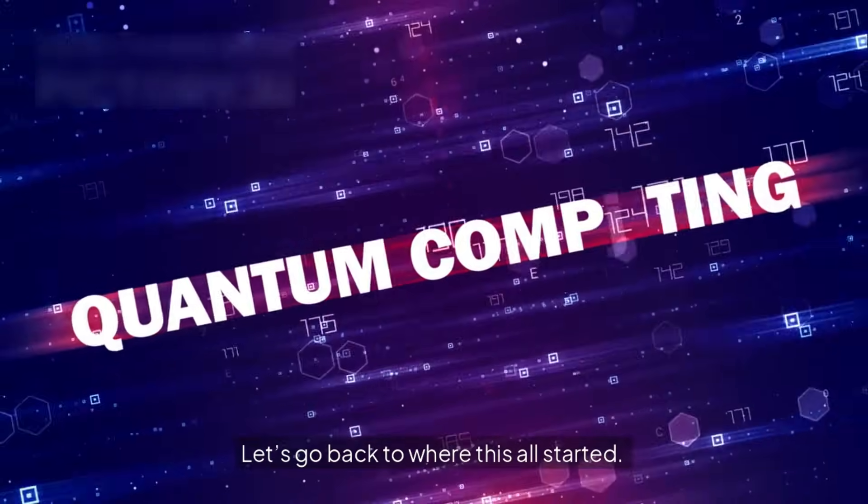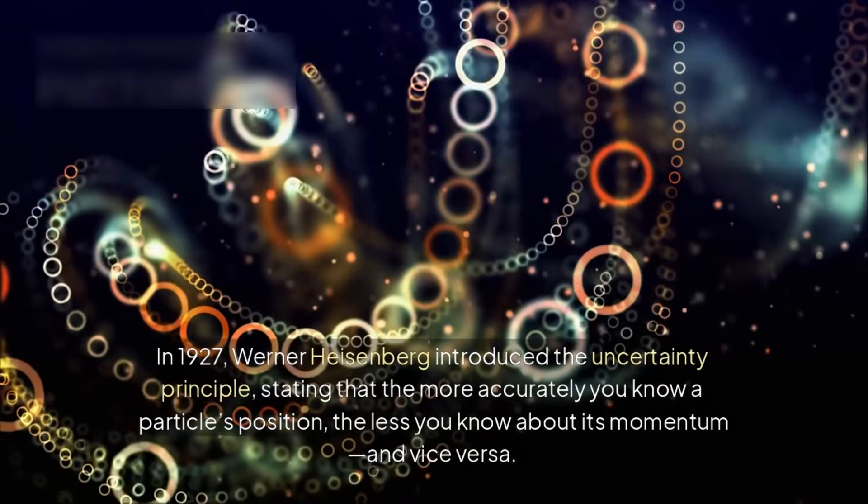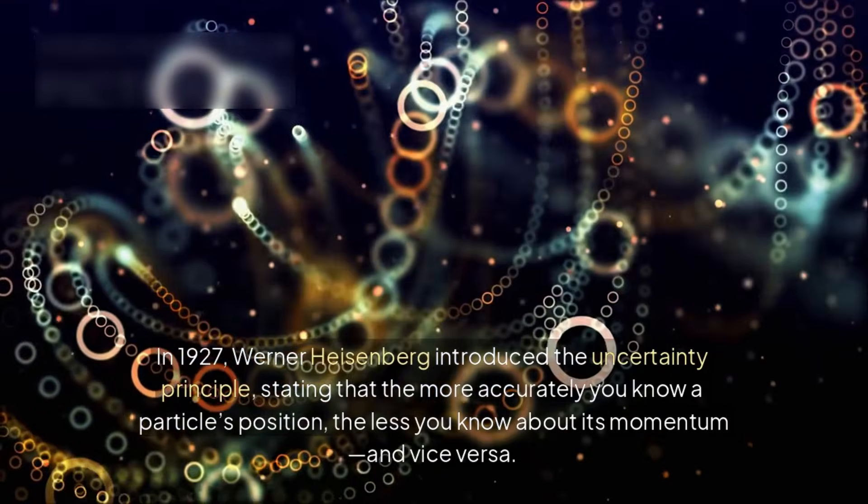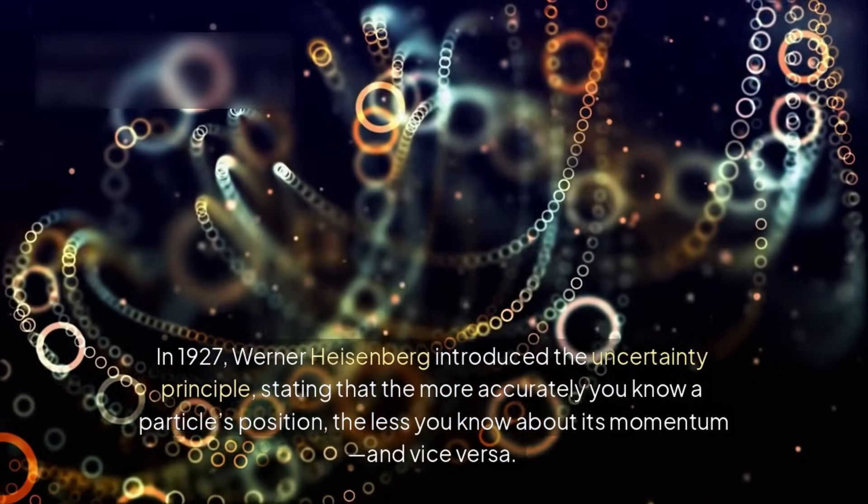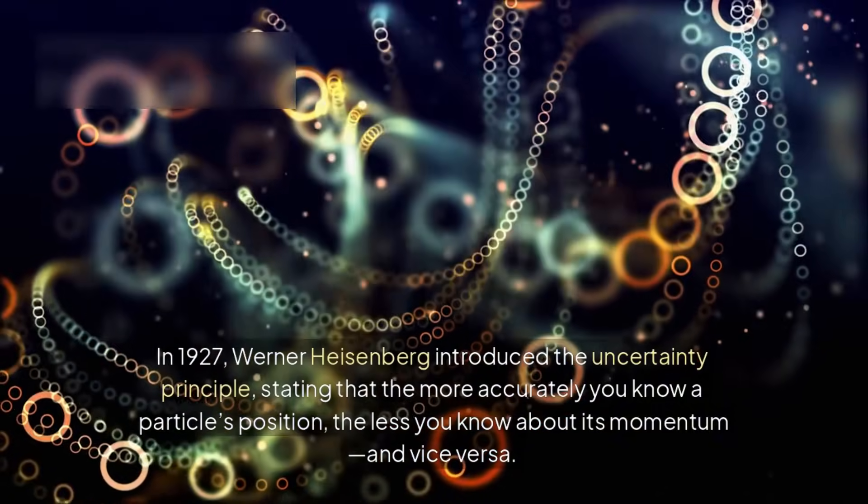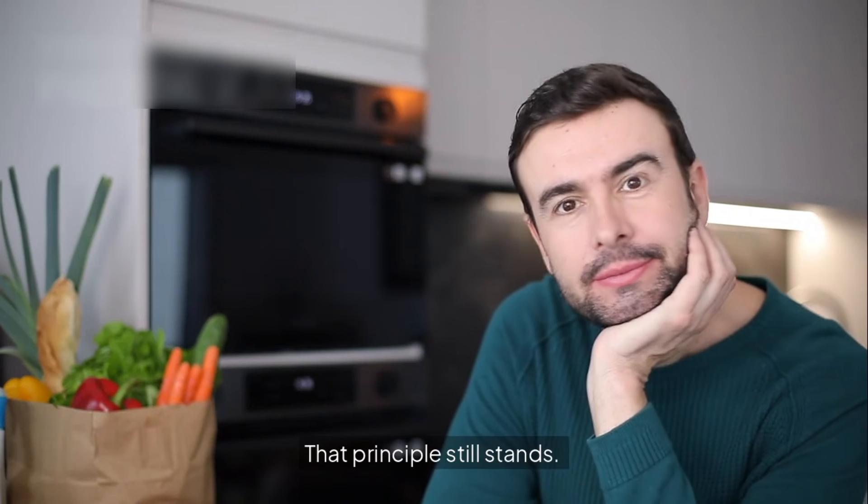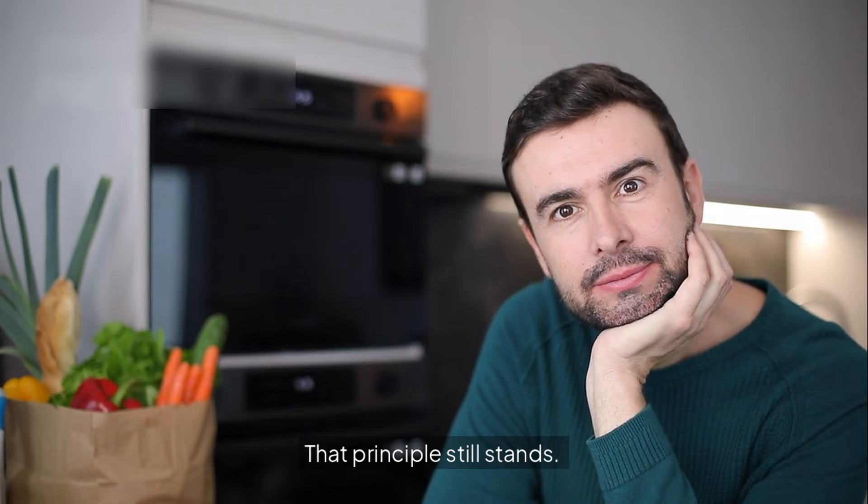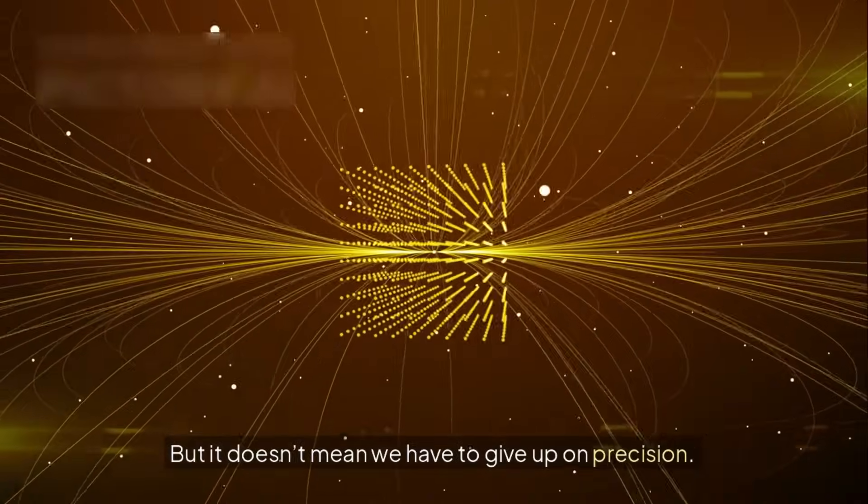Let's go back to where this all started. In 1927, Werner Heisenberg introduced the uncertainty principle, stating that the more accurately you know a particle's position, the less you know about its momentum, and vice versa. That principle still stands. But it doesn't mean we have to give up on precision.